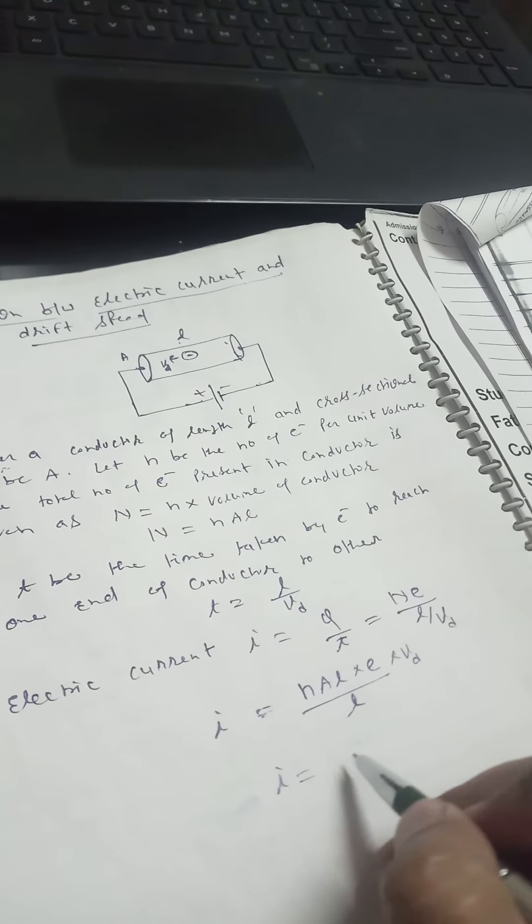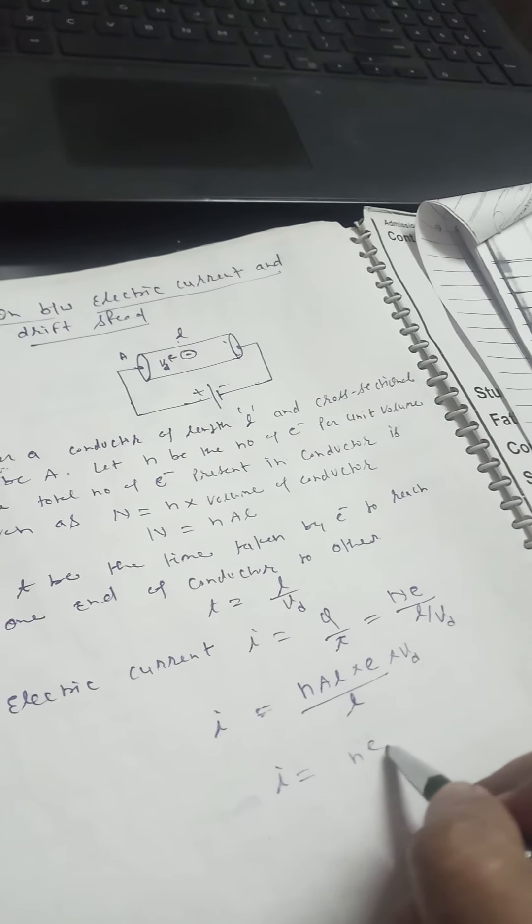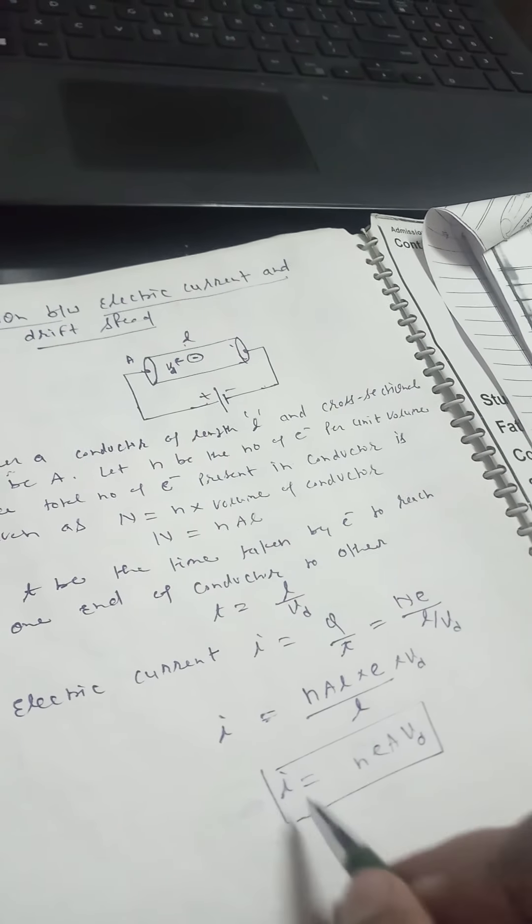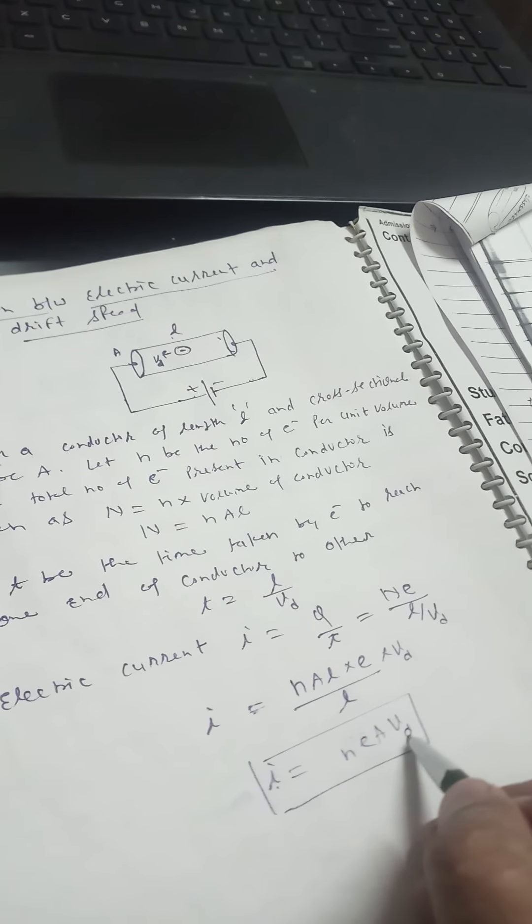I equal to n e A vd. This is the required formula relating electric current and drift velocity.